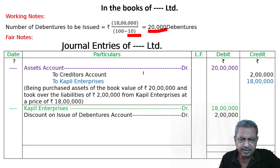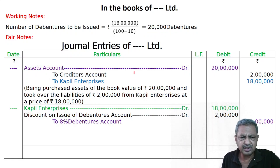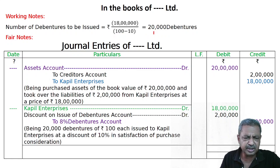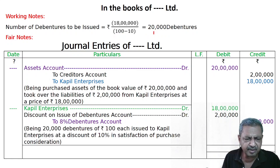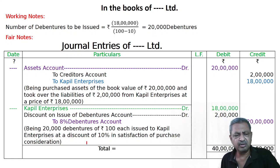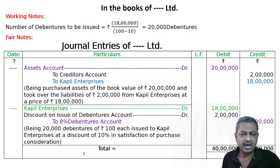To 8% Debentures account — 20,000 debentures at Rs. 100 each equals 20 lakhs. Kyunki yahan bhi khali par value aayegi. Narration: Being 20,000 debentures of Rs. 100 each issued to Copil Enterprises at a discount of 10%, in satisfaction of purchase consideration. This is all about your answer.